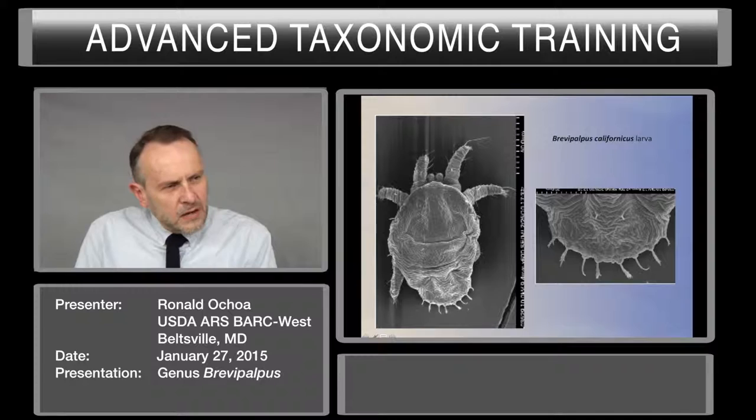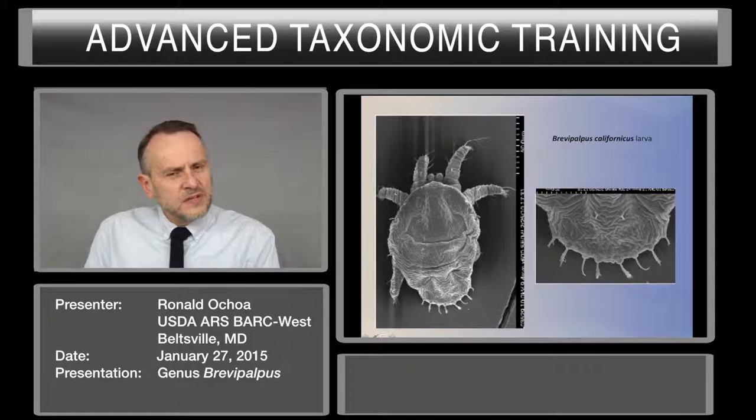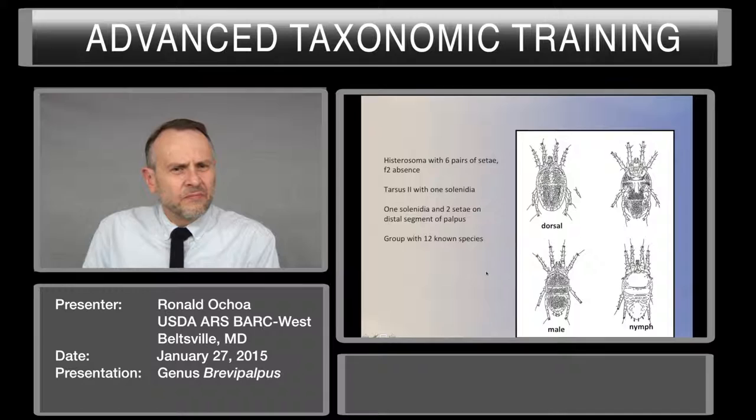The larva is also key. The immatures and the type of setae in the immatures, especially the dorsal laterals — F2, F3, H2, H1 — are key to understand this group.